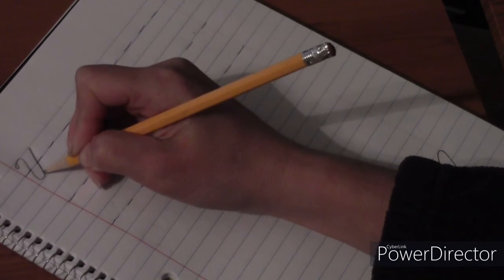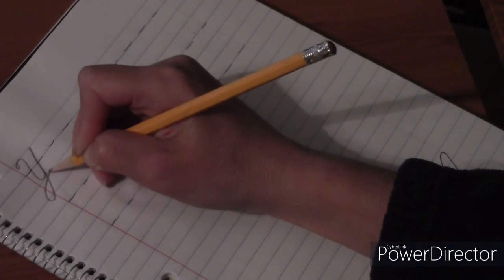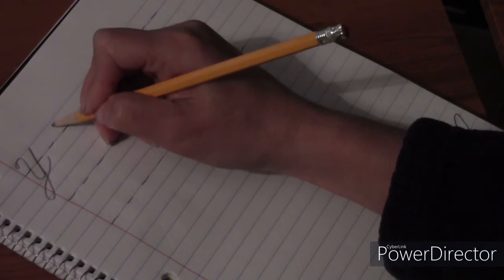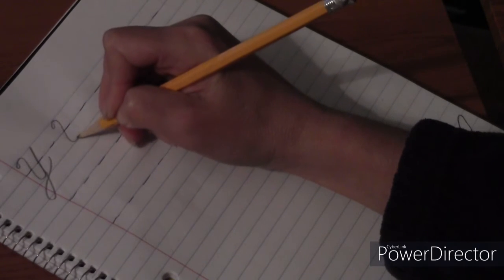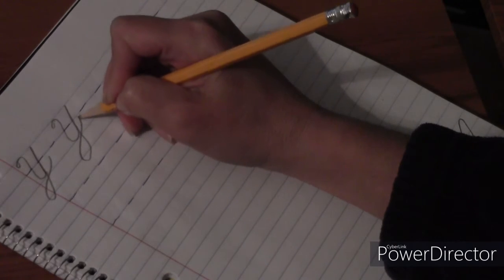But instead of doing the tiny tail going this way, we're actually going to crash through the line, make another loop and scoop up. Okay, tiny loop, curve up like the U, go crashing through the floor, put a loop on it.